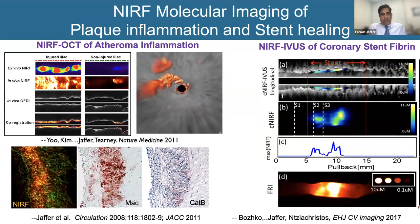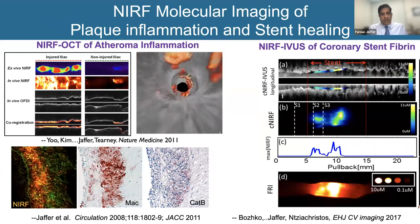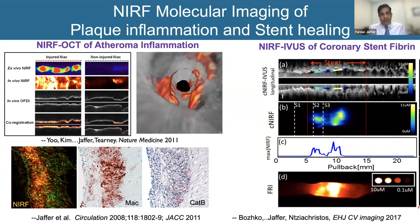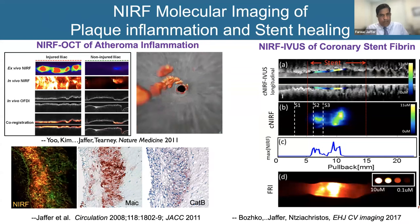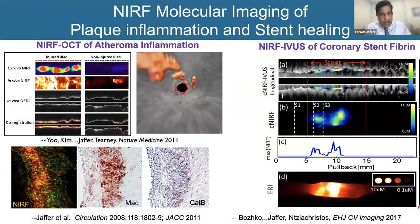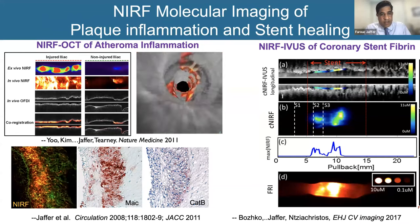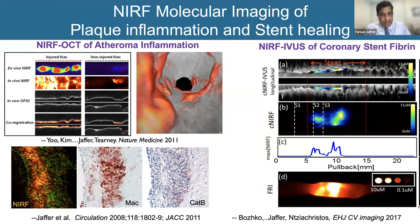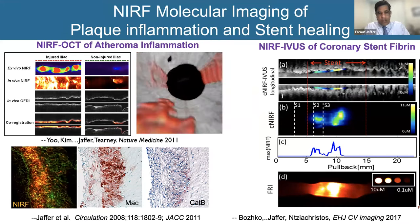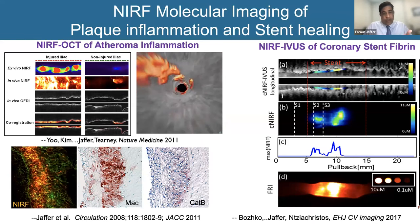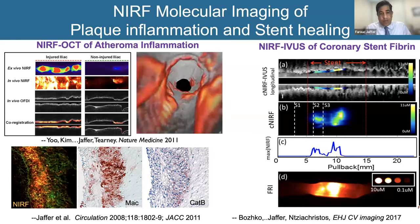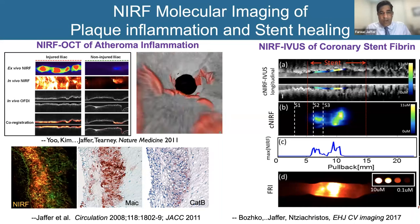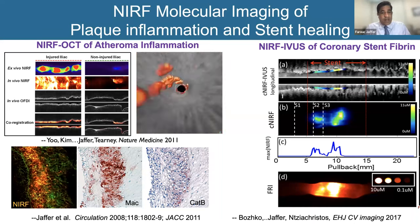One of our first 2D intravascular pullbacks — surface shaded, showing plaques in a rabbit aorta, which is the size of a human coronary. The levels of orange are more intense, reflecting the amount of cathepsin protease activity and inflammation. Without the color map, they would just look like little gray blobs. But there is obvious heterogeneity, and it really begs the question of whether more inflamed plaques are more likely to progress — something we don't actually know yet in human coronaries.